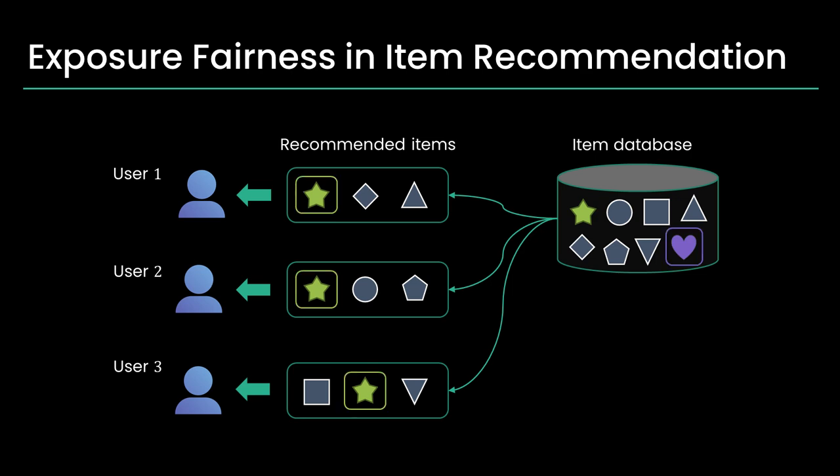However, the system tends to favor a few popular items, overshadowing less popular ones. This exposure unfairness is particularly problematic in areas such as online job markets, where items are directly linked to users. Ensuring fair exposure is vital as it significantly impacts overall user satisfaction.